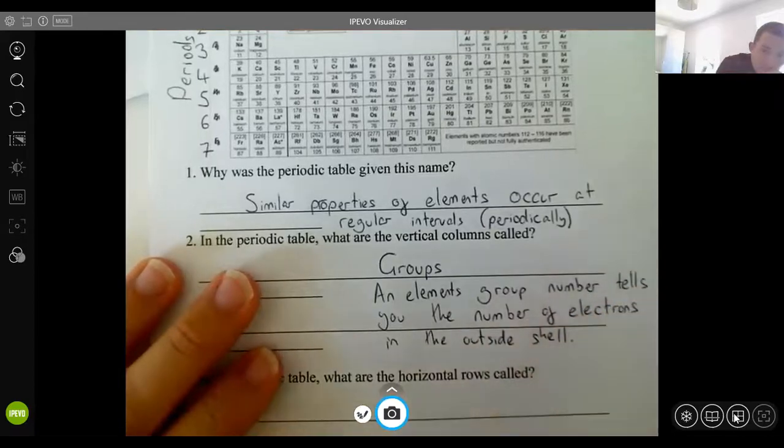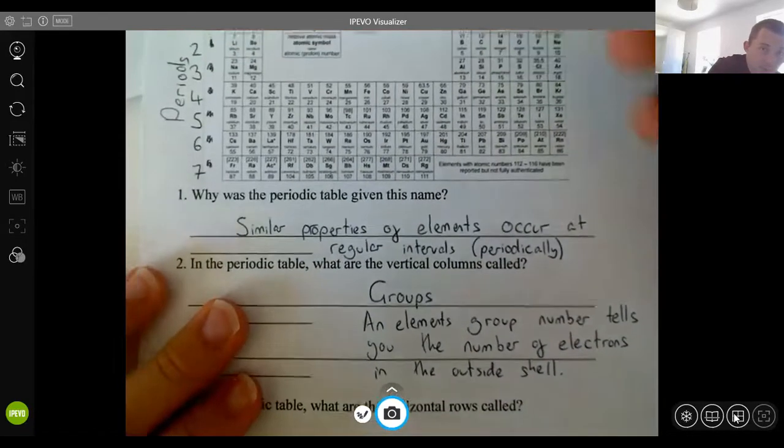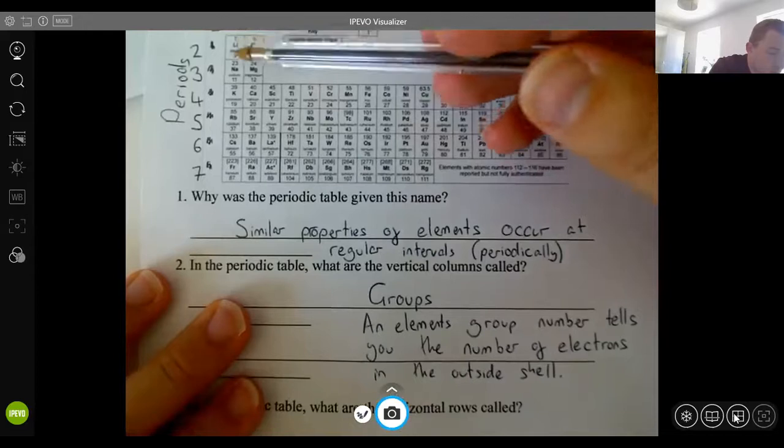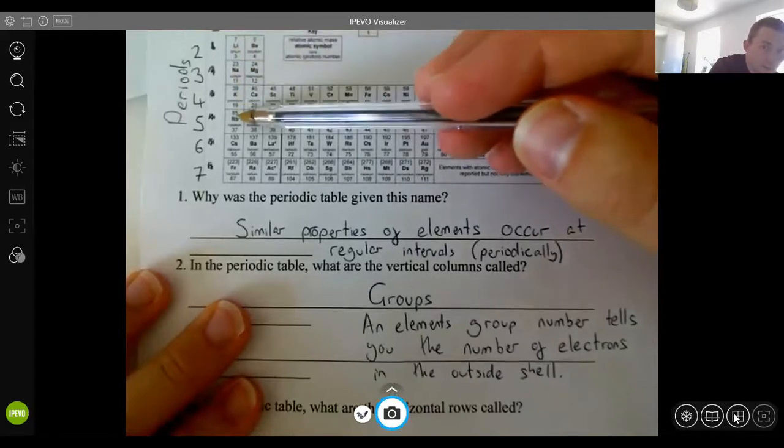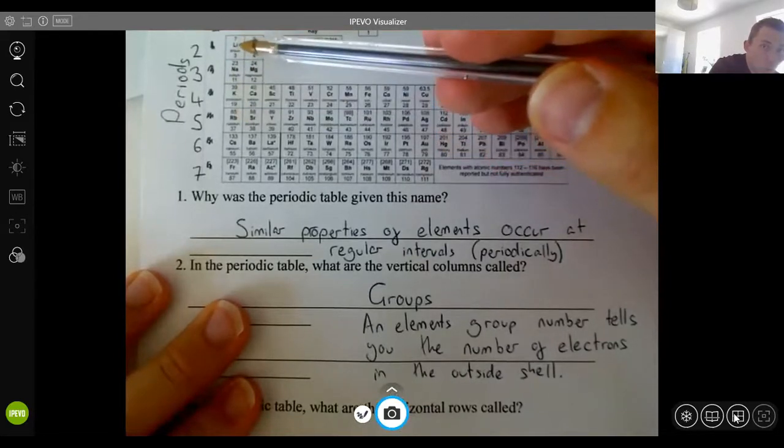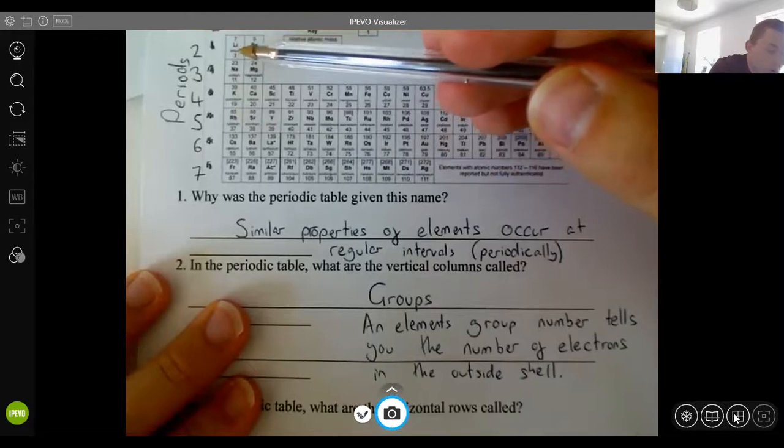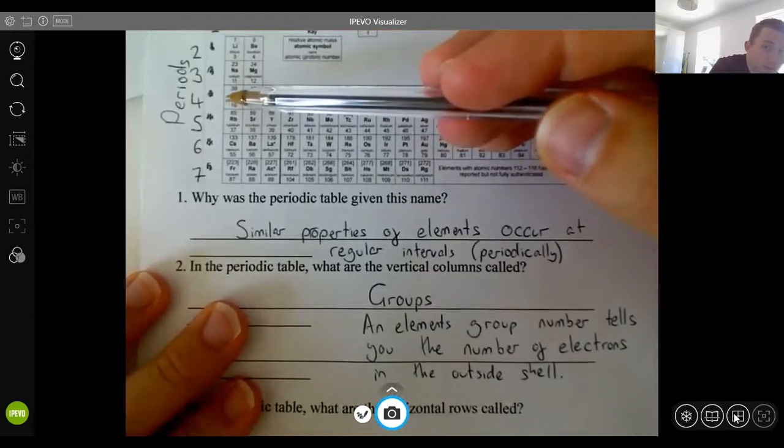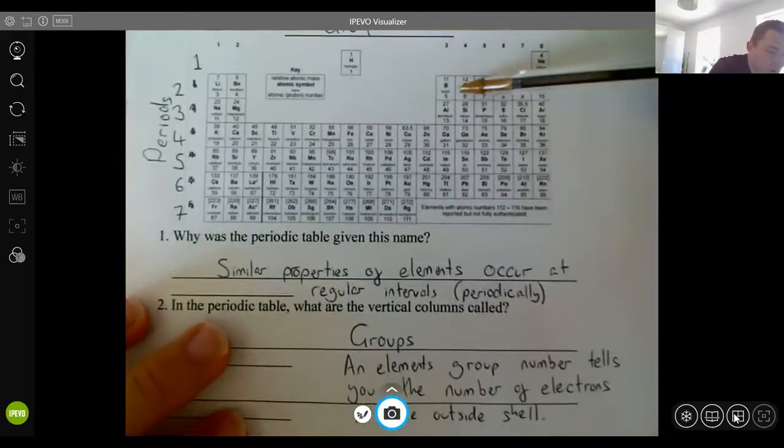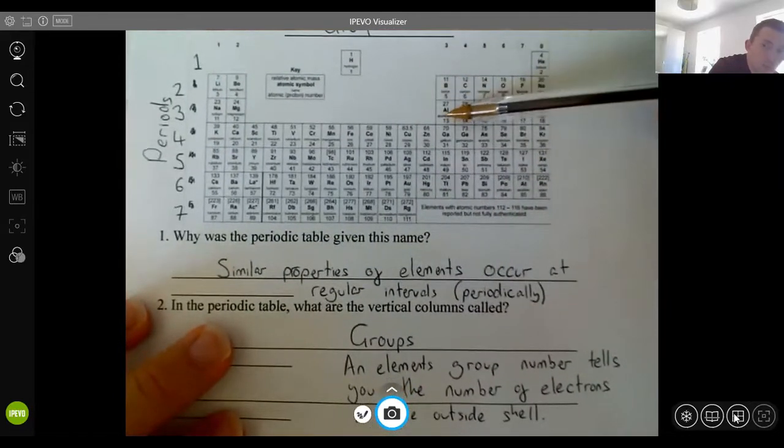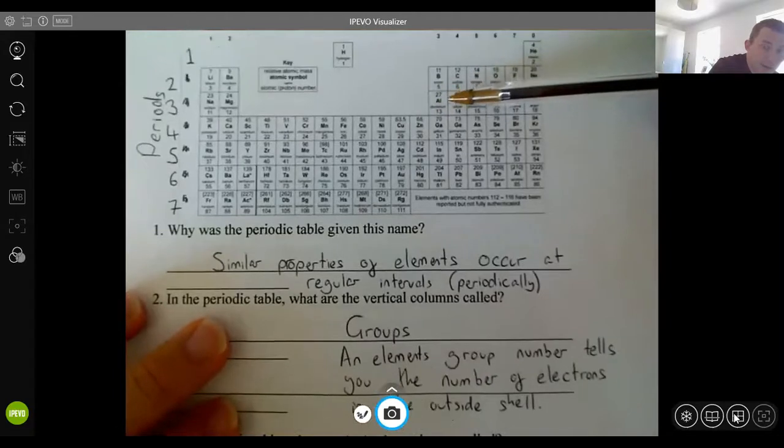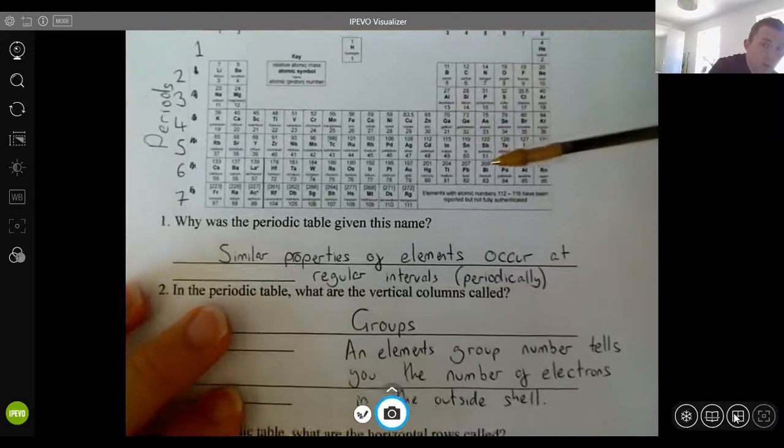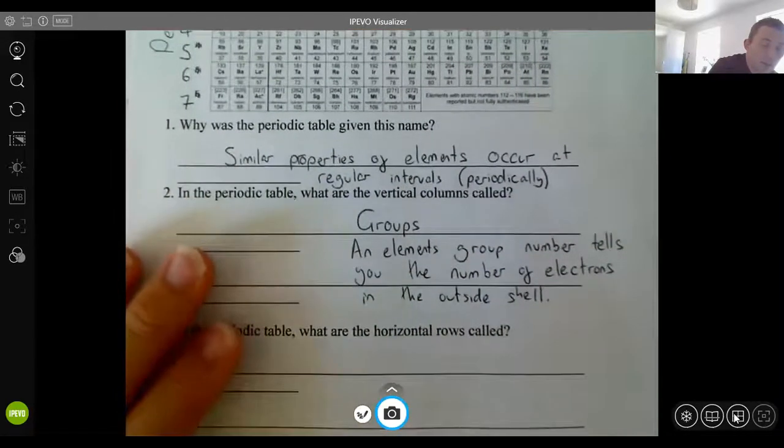So what I mean by that is every element in group one, so lithium, sodium, potassium, rubidium, they all have one electron in the outside shell. So when you drew lithium, sodium, potassium, you notice they're all group one. They've all got one in the outside shell. Likewise, look at group three, when you drew boron and aluminium. They have three on the outside shell. They're in group three. So the group number tells you the number of electrons in the outside shell.